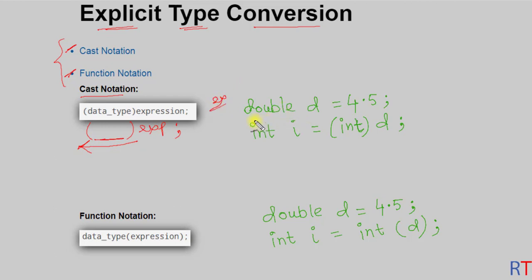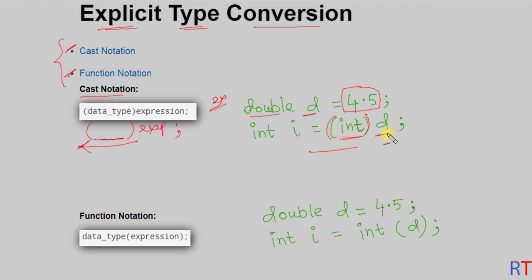For example, here we have one double variable 'd' which has the value 4.5, and then we are using the cast notation where the data type is inside the parenthesis and the expression is outside the parenthesis. This way we are converting the double data type to one integer data type.